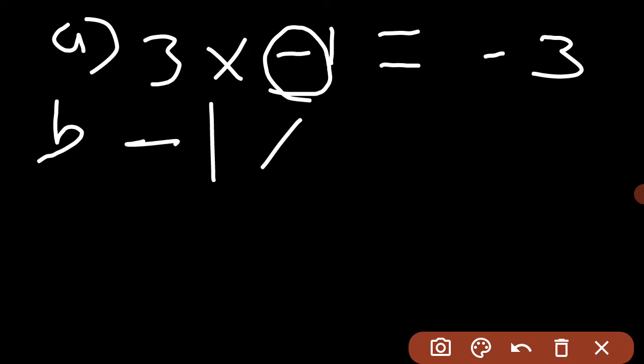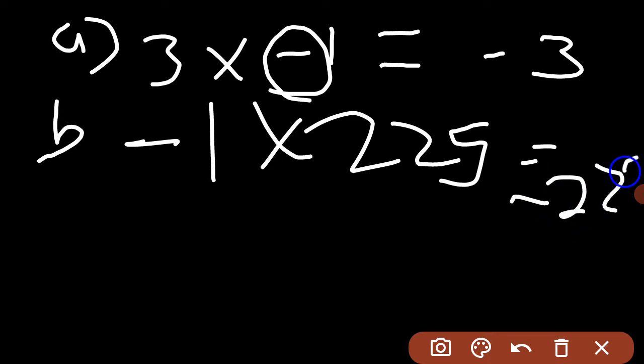Part B is minus 1 into 225, which equals minus 225.